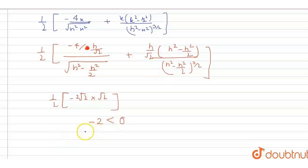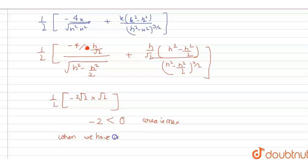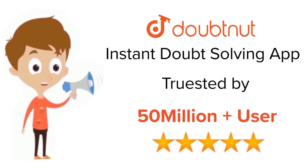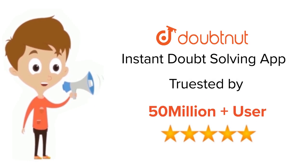So area is maximum when we have an isosceles triangle. For class 6 to 12, IIT JEE and NEET level — trusted by more than 5 crore students. Download DoubtNit app today.